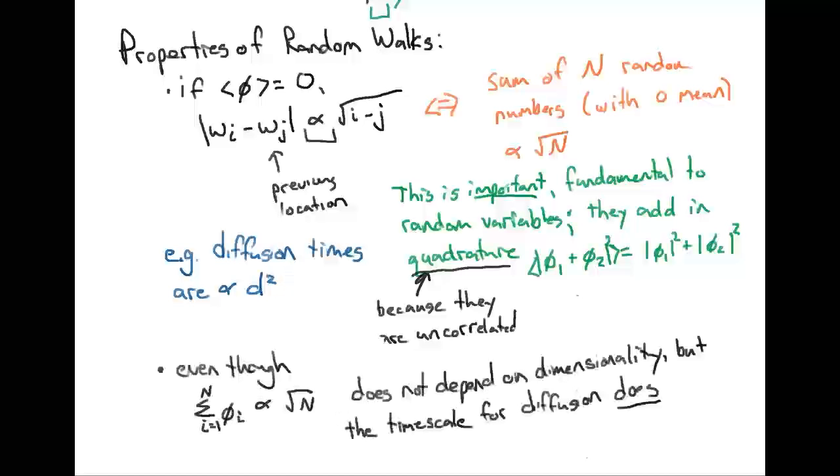Another interesting property of random walks is that even though the sum of a bunch of random numbers grows as the square root of n and doesn't depend on the number of dimensions, you can take a random walk in one dimension and just walk back and forth on a number line, or in two dimensions, three dimensions, or even higher. The fact that your displacement from your starting point grows as the square root of n does not depend on dimensionality. However, the time scale for reaching a certain displacement does.